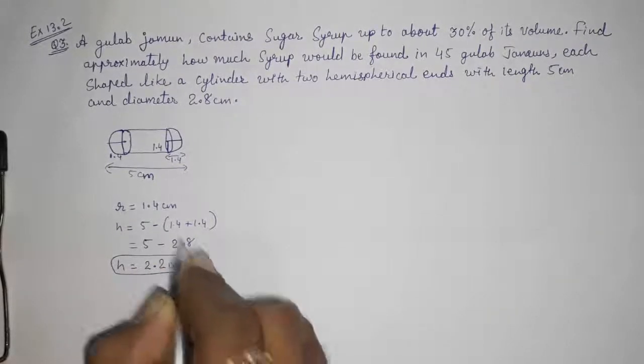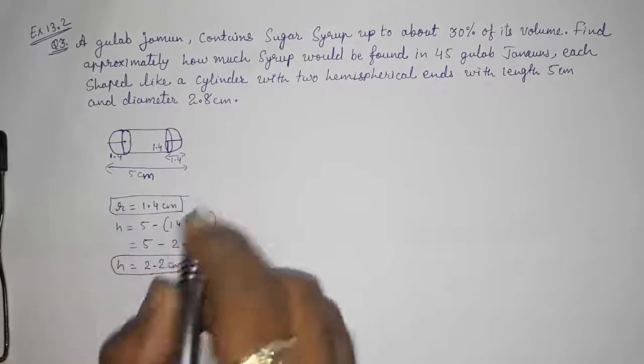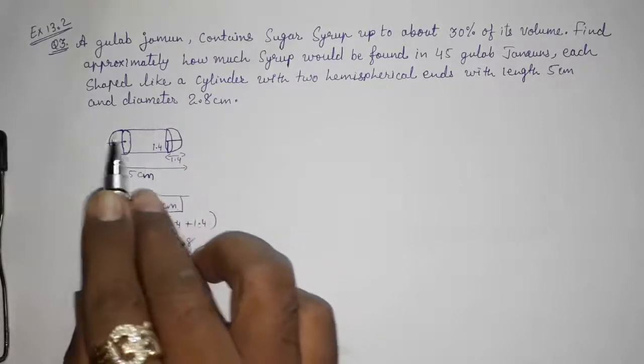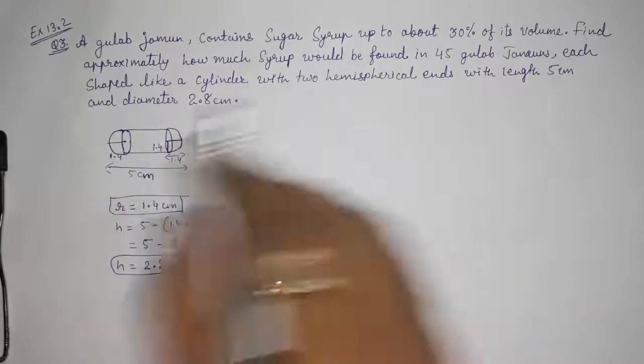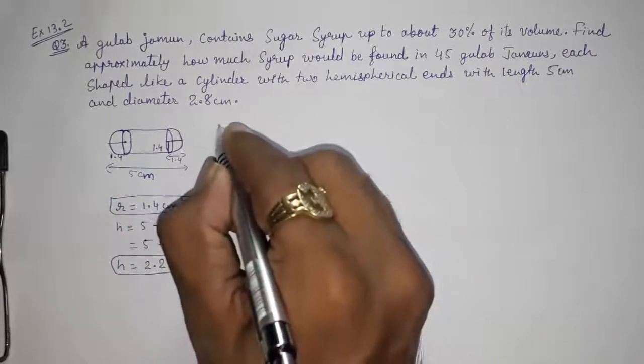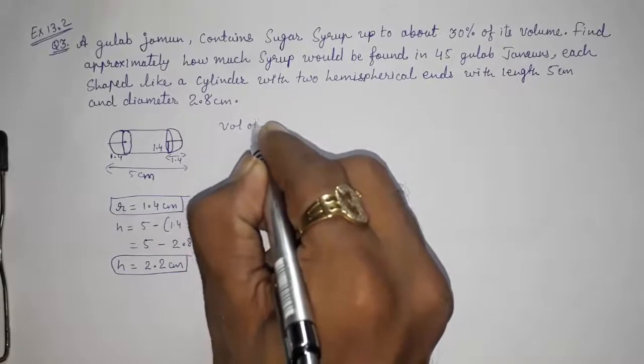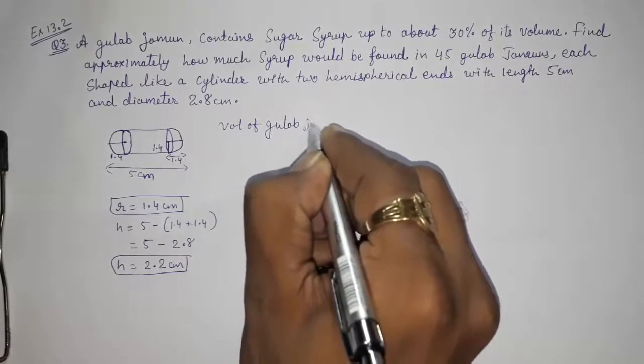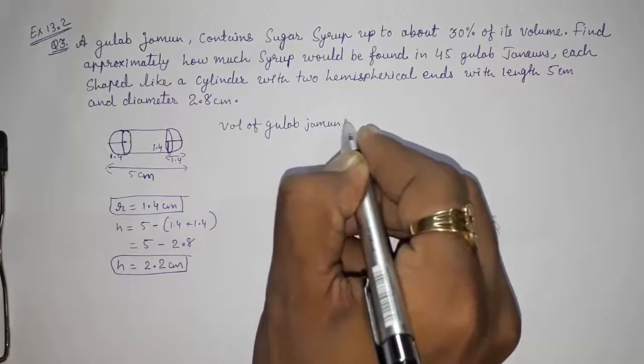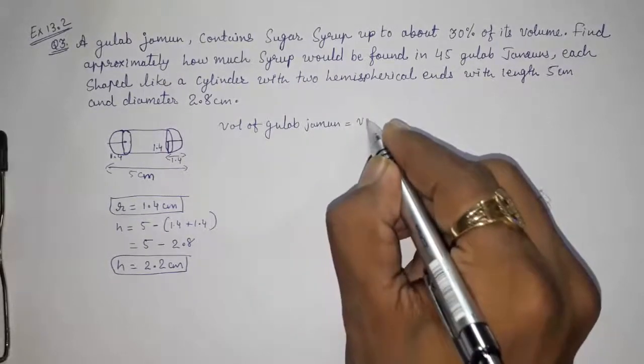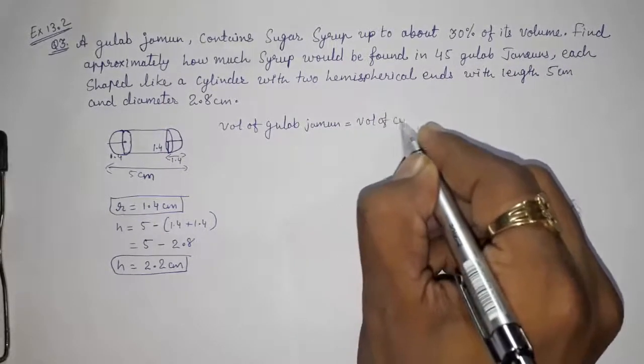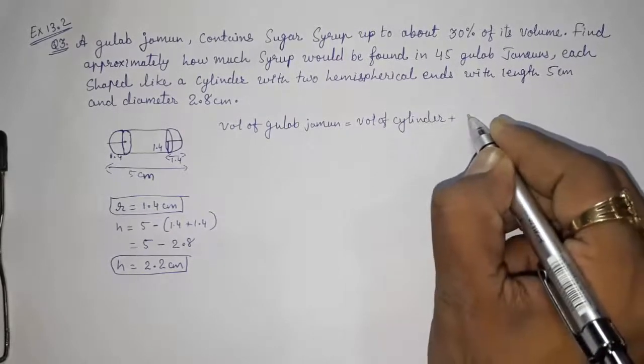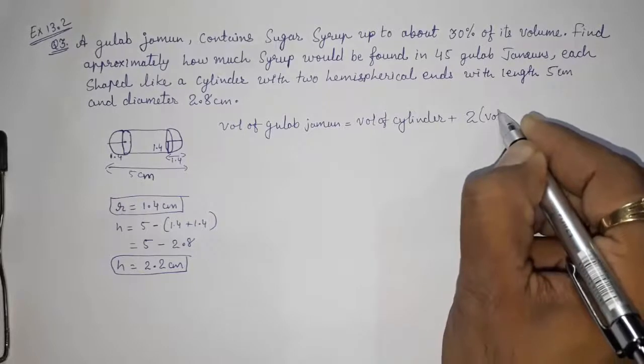This will be our height and this will be the radius. We want height and radius to find the volume of this cylinder and this hemisphere. Now we are finding out the volume of one gulab jamun. Volume of one gulab jamun is equal to volume of cylinder plus 2 volume of hemisphere.